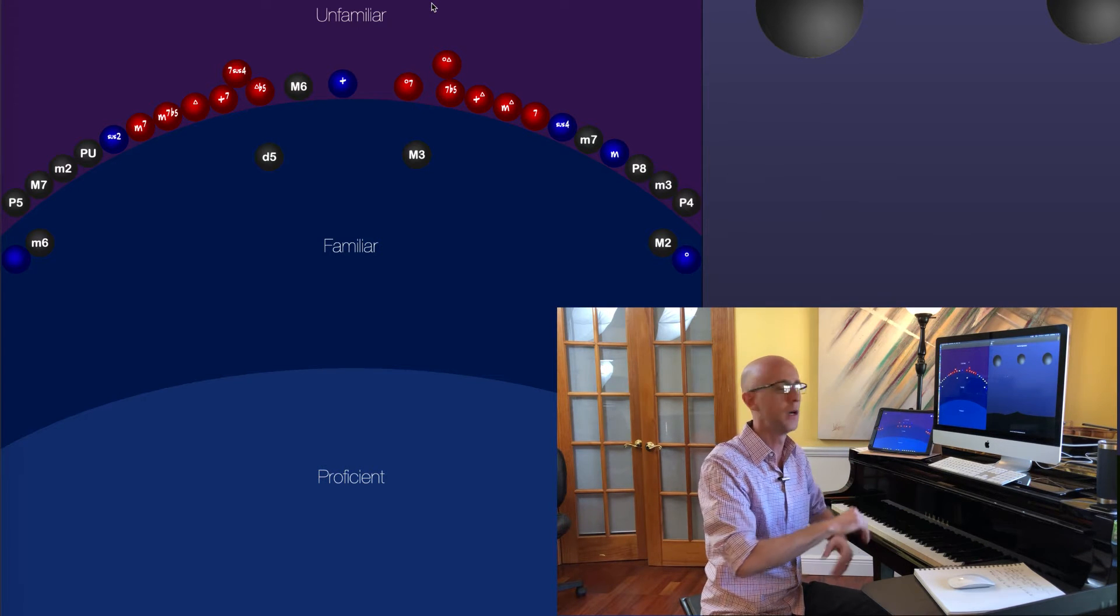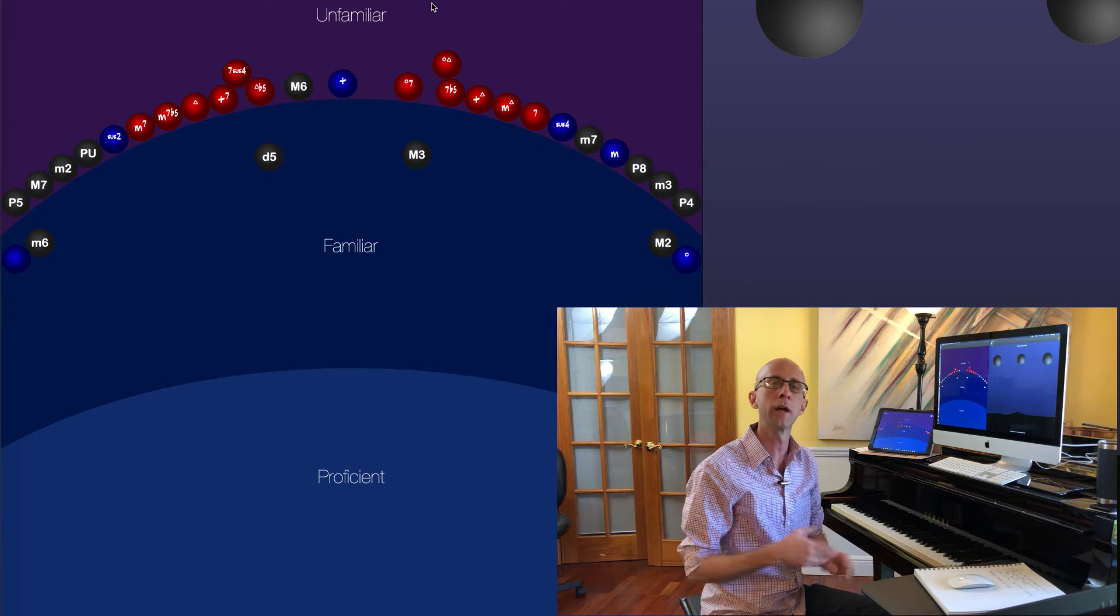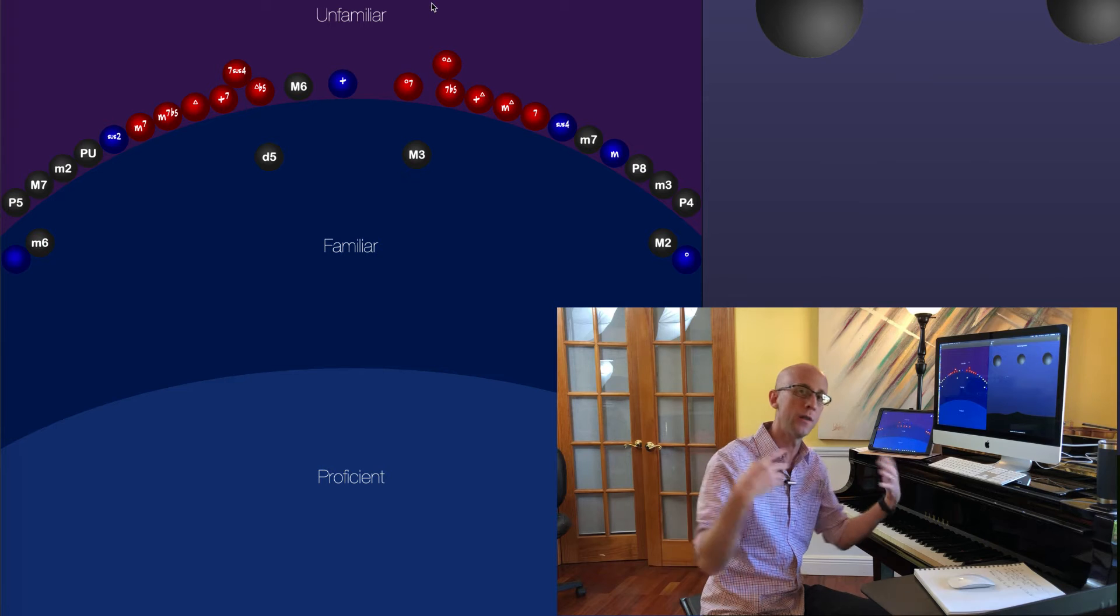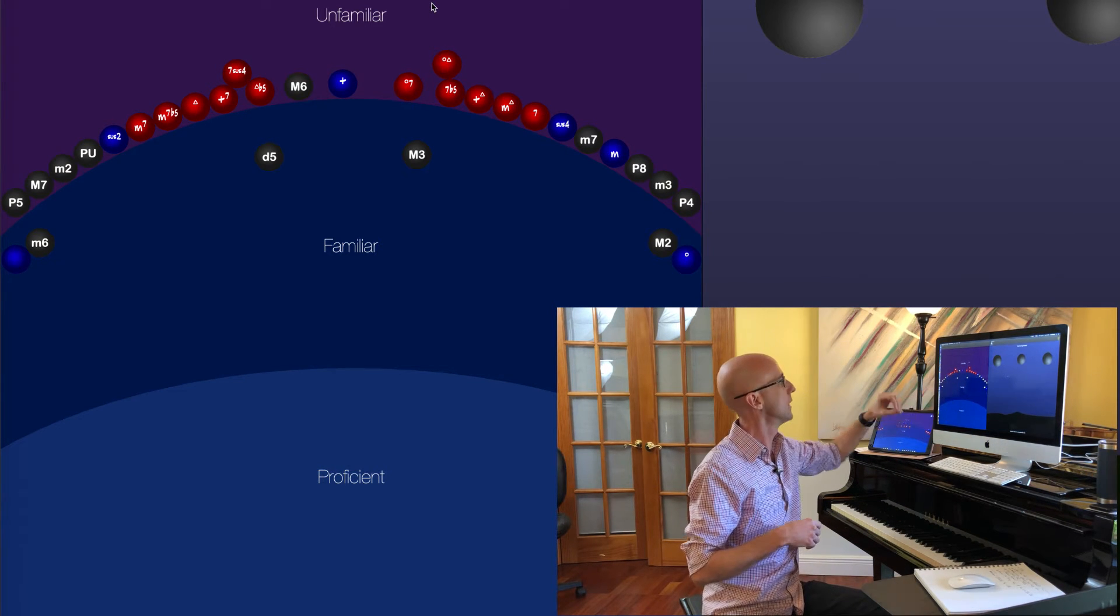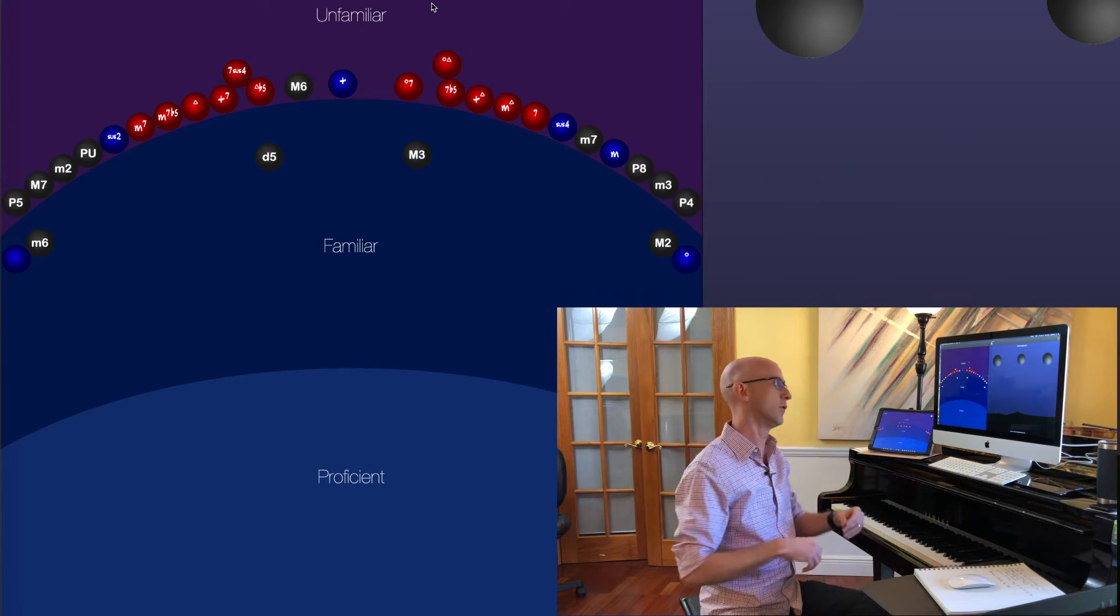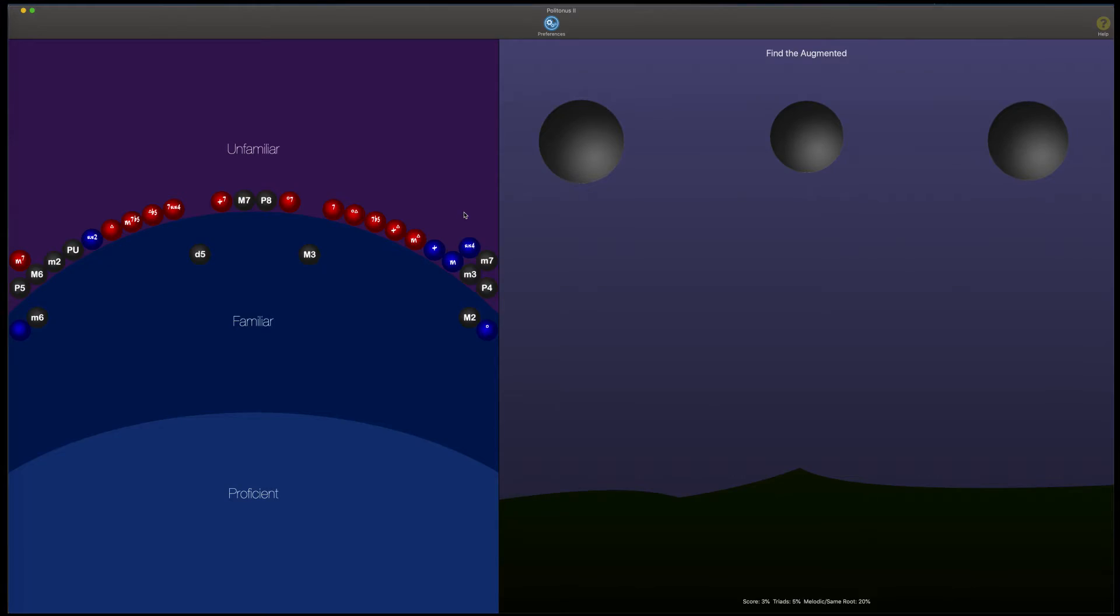They're color coded accordingly so that you see the black balls are basically the harmonic intervals, the ones you're familiar with—major third, perfect fifths, minor six, all that stuff. Then what we have next to that are these other colored balls. The red ones are your seven chords, your major sevens, your minor seven flat fives. And the blue spheres basically represent just your triads, your three note chords.